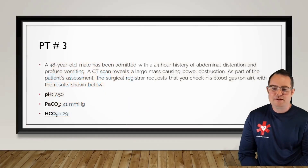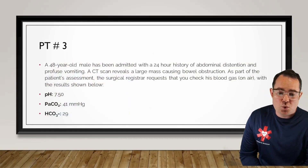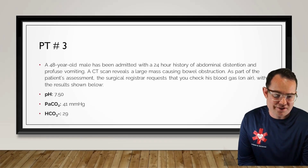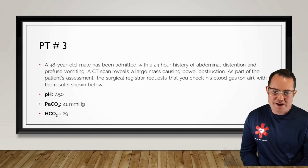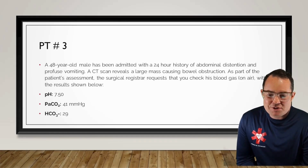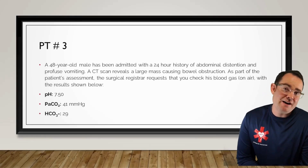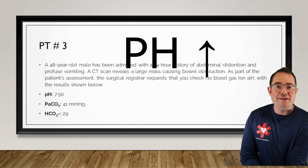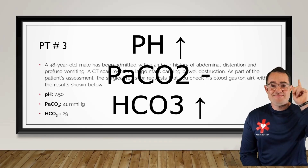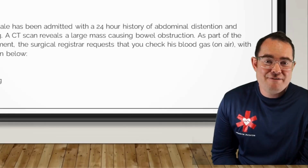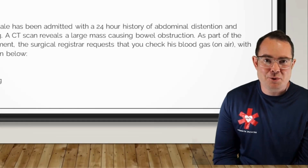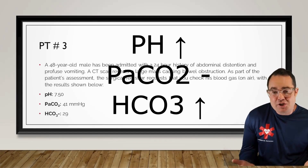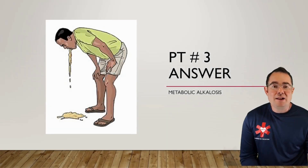A 48-year-old male admitted with a 24-hour history of abdominal distension and profuse vomiting. CT scan reveals a large mass causing a bowel obstruction. The surgical registrar requests an ABG. pH of 7.5 — high, which puts us into alkalosis. PaCO2 of 41 — considered normal. HCO3 is high. We have a metabolic equal: both pH and HCO3 are in the same direction — both high. This makes it metabolic in nature, so we have metabolic alkalosis.